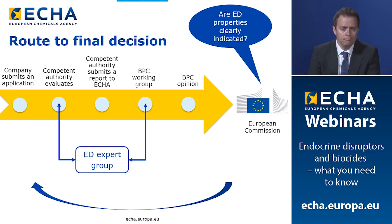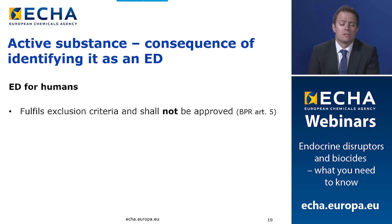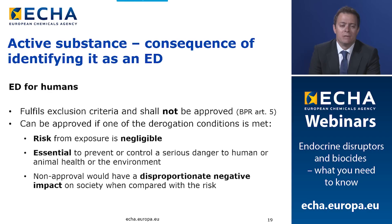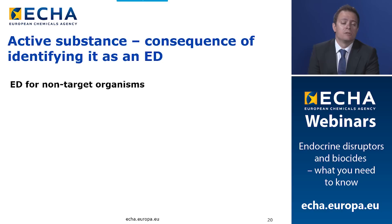What are the consequences of identifying a substance as an endocrine disruptor? If the endocrine disruptor criteria is met for humans, the substance fulfills the exclusion criteria and shall not be approved under BPR Article 5 — unless one of the derogation conditions is met, such as negligible risk from exposure, or the substance being essential to prevent serious damage, or non-approval having a disproportionate negative impact on society. If the substance meets the ED criteria for non-target organisms, it meets the substitution criteria under BPR Article 10 but can still be approved.